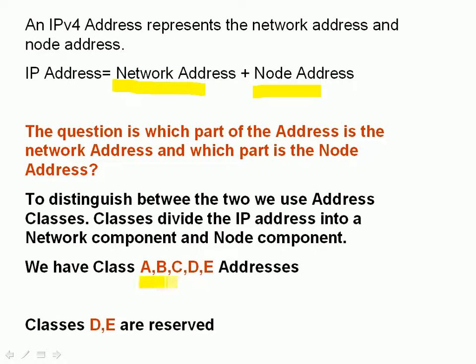Only class A, B, and C are used for addressing. The other two — class D and class E ranges — are reserved. Class D is used for multicast and class E is used for research.